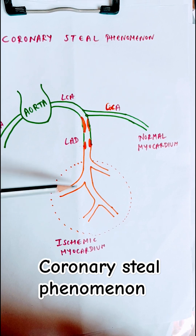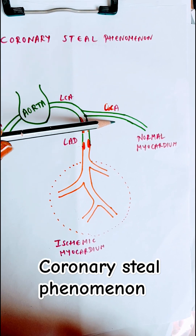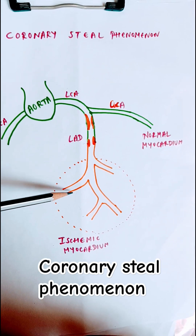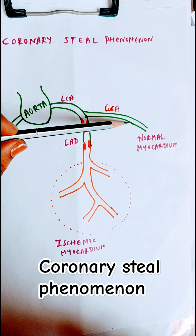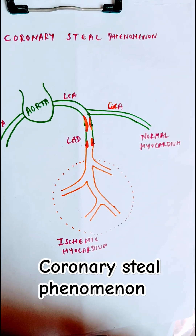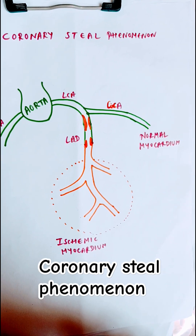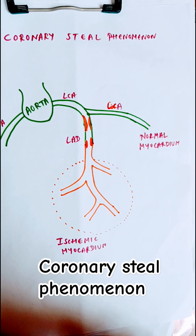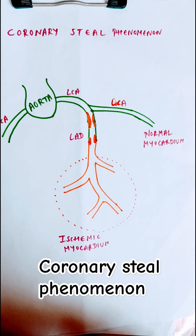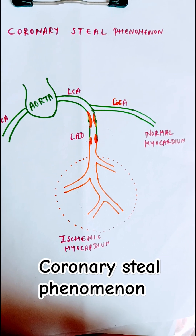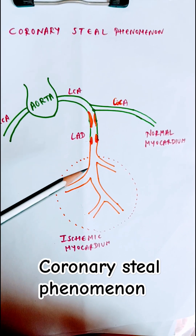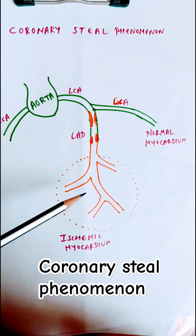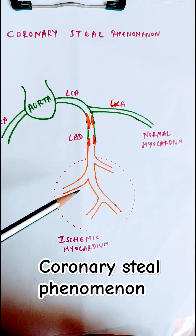This redistribution of blood flow — from an already compromised ischemic area to a normal area — is called coronary steal phenomenon. Importantly, stress tests such as those using adenosine rely on this phenomenon to detect regions of ischemia in the heart.